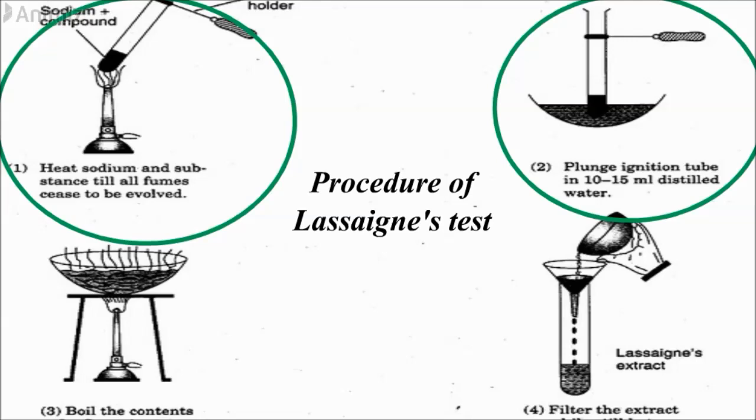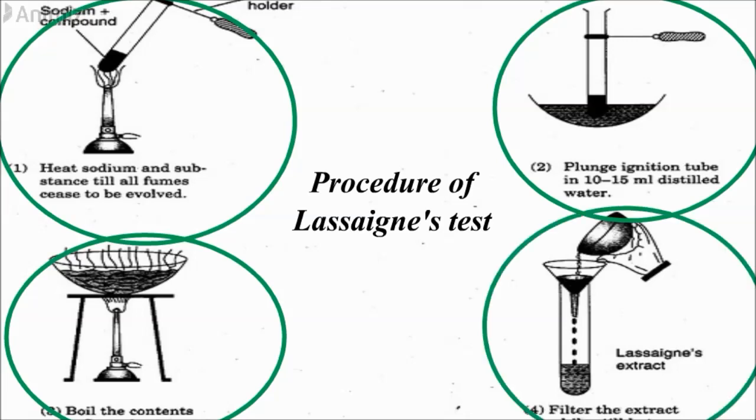Then plunge this fusion tube in 10-15 ml of distilled water. Then boil the contents of the evaporating dish and filter the Lassie's extract while it is hot. This extract is also known as sodium fusion extract.